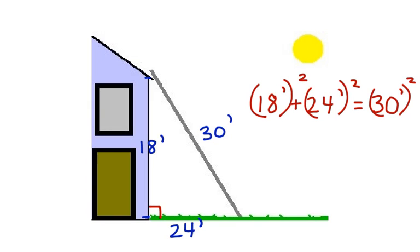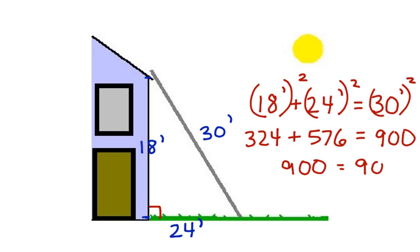So now we would have 324 plus 576 is equal to 900. 900 is equal to 900, so this checks and our work is complete.